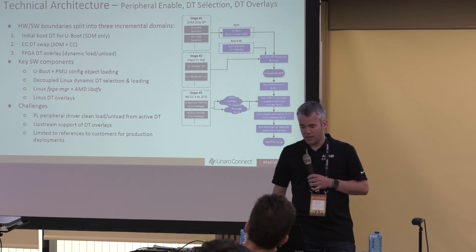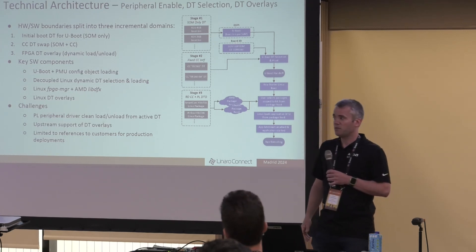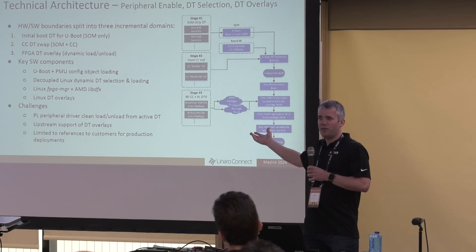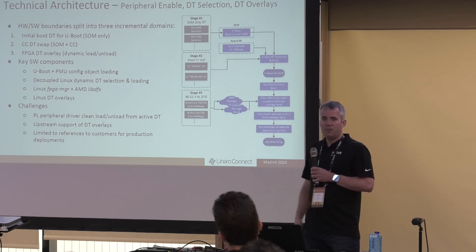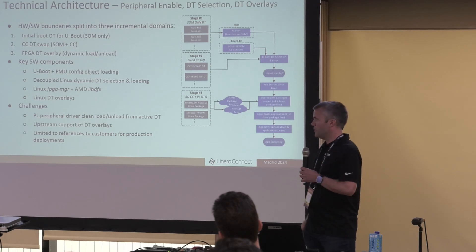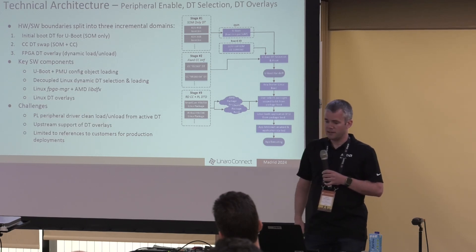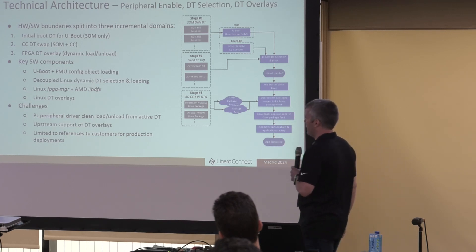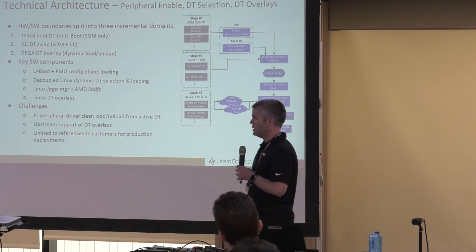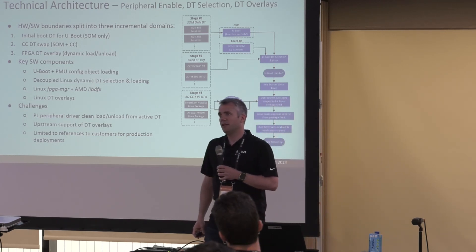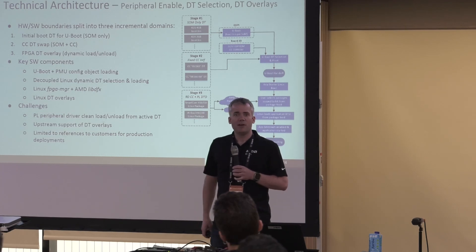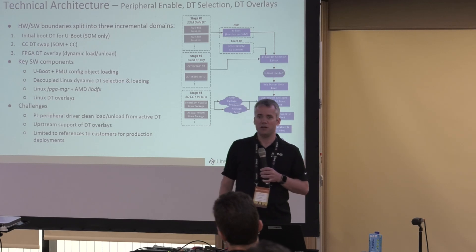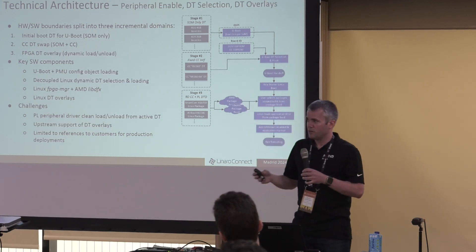There are limited customer references for production deployments — customers have wanted this but we haven't had it widely available. There's not a lot of baseline code for them to exercise this. That said, since we've done this we've seen a lot of customer interest — light bulbs going on, people saying 'I didn't know I could do that, that's really awesome and super beneficial to me,' especially in embedded systems where you're constrained. You want to use the smallest device possible.